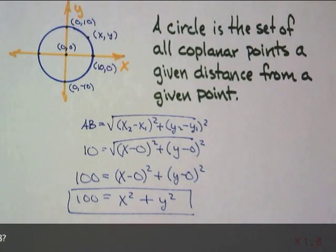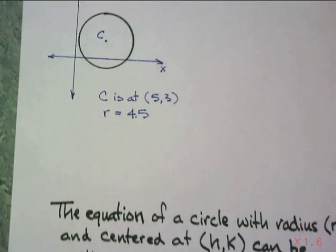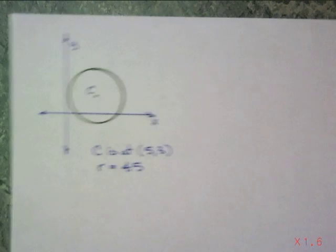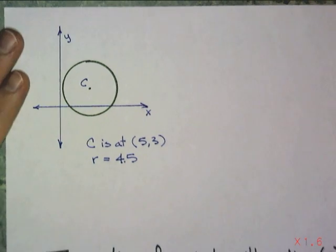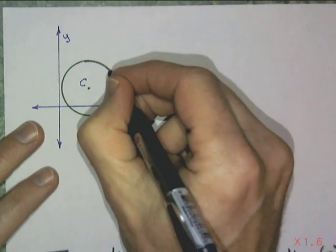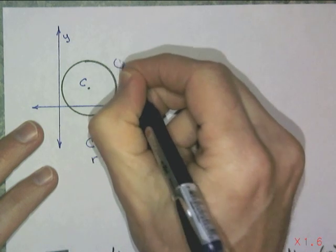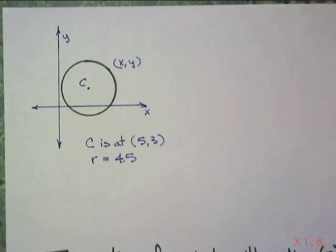But, of course, not all circles are centered at the origin. So, this time I have got a circle centered at (5,3). And I'm telling you that the radius is 4.5. All right? Well, you're thinking, okay, now I've really made it difficult for you. But yet, I haven't. There are an infinite amount of points in x and y. Right? Distance formula.